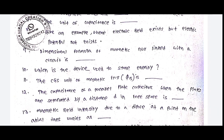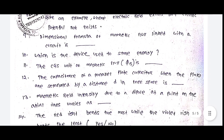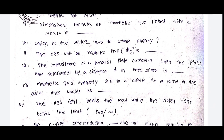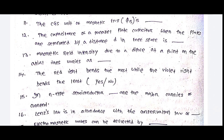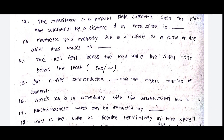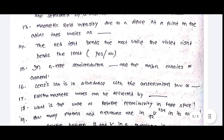The dimensional formula of magnetic flux linked with a circuit is dash. Which is the device used to store energy? The CGS unit of magnetic flux is dash. The capacitance of a parallel plate capacitor when the plates are separated by a distance d in free space is dash. Magnetic field intensity due to a dipole at a point on the axial lines varies as dash.